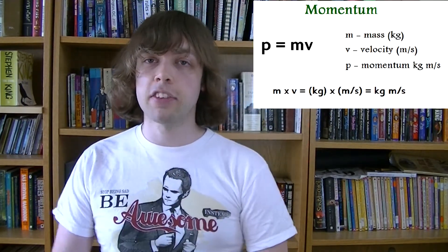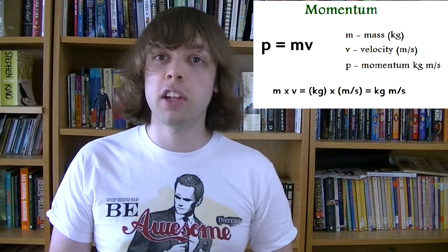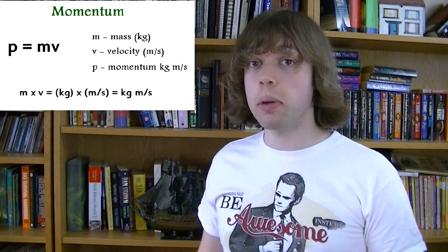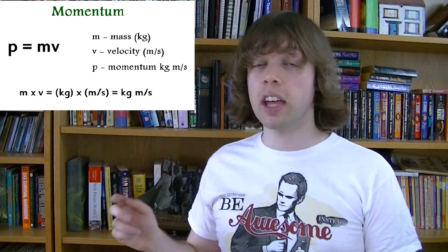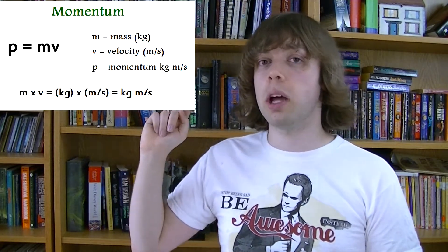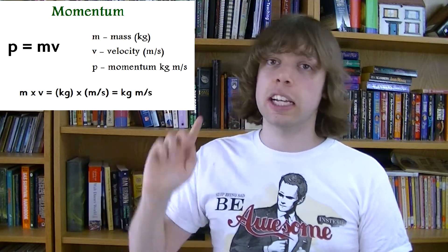The equation for the momentum of an object in physics is this, mv. That's the mass of the object multiplied by its velocity. And you might notice that that means we measure momentum in kilograms meters per second. Mass, kilograms, multiplied by velocity, meters per second. And I'm afraid there's no special unit for this one. There's no newtons like there is for force. You just have to remember kilograms meters per second.